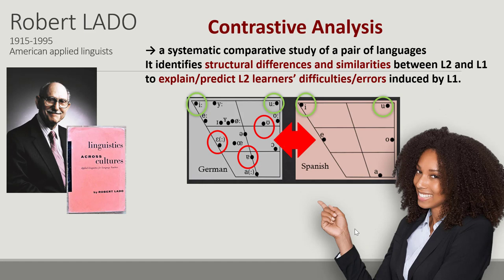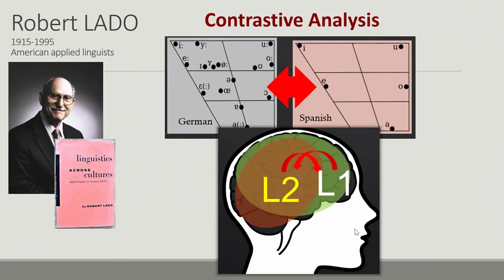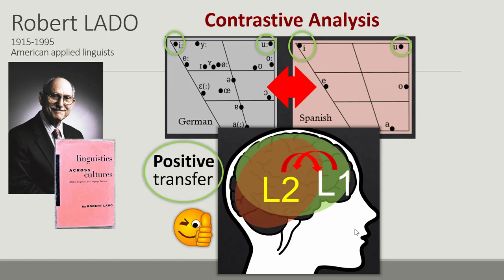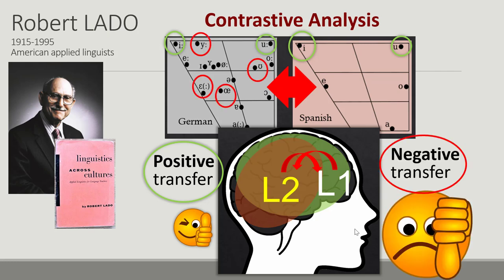Contrastive analysis is based on the assumption that when we are learning a new language, the existing linguistic mental representation interferes with items of the new language system in our mind. The similarity between first and second language systems helps to acquire a new concept — we call it a positive transfer. But differences between languages can hinder second language acquisition; in this case, a negative transfer occurs.